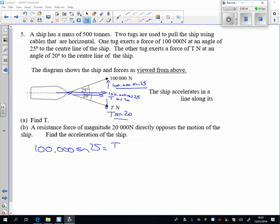So I'm going to have 100,000 sine of 25 is equal to T sine 20. If I want to know what T is, I'll just do 100,000 sine 25 divided by the sine of 20. Tapping that into the calculator.